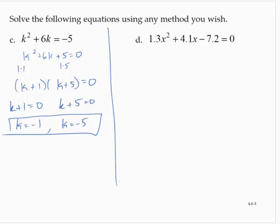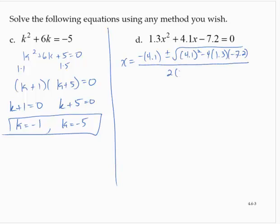Problem d: 1.3x² + 4.1x - 7.2 = 0. I'm not even going to try to factor this. I'm going straight to the quadratic formula. x = (-4.1 ± √(4.1² - 4(1.3)(-7.2))) / 2(1.3).